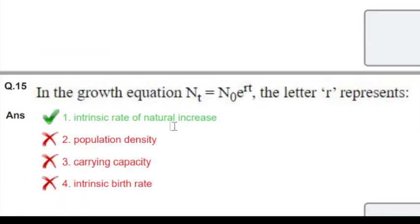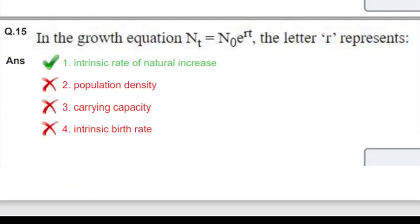In the population chapter, in the growth equation dN/dt = rN, the r represents what? R represents the intrinsic rate of natural increase. Simple question. These are covered in detail in the classes available in the playlist.